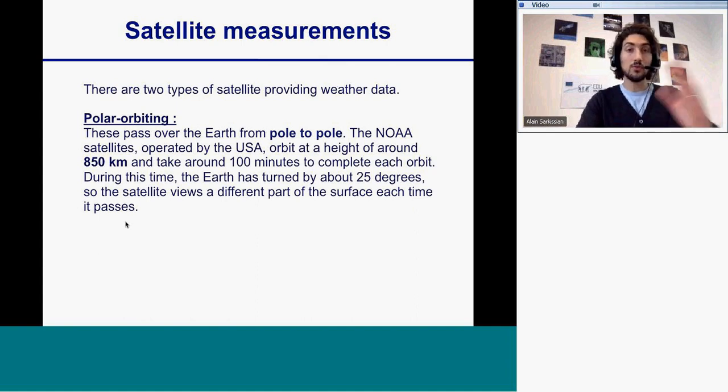The second type of satellite is what we call a polar orbiting satellite that goes from pole to pole and are much closer to the Earth.